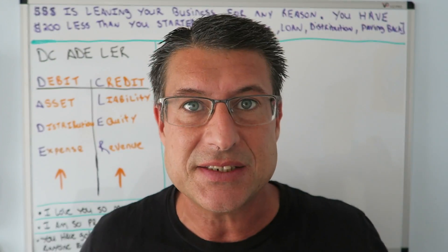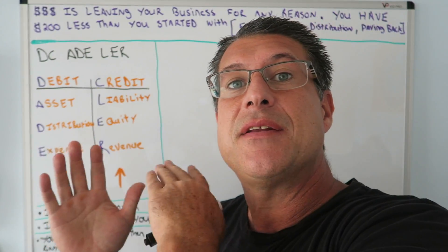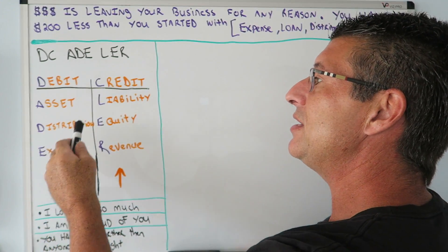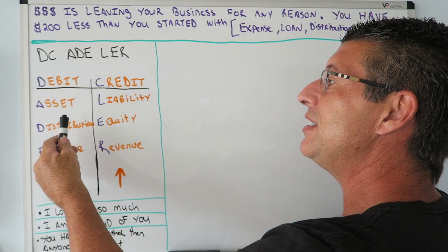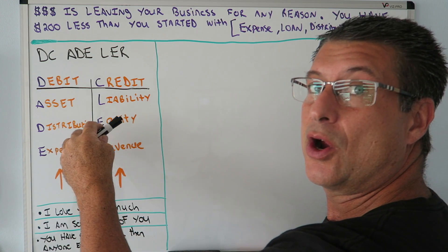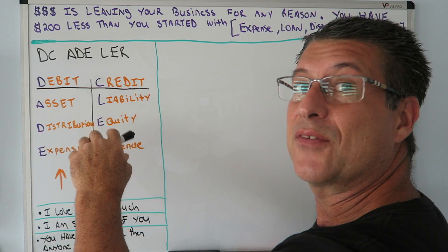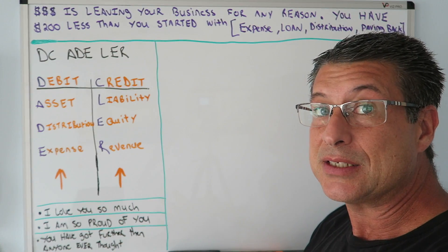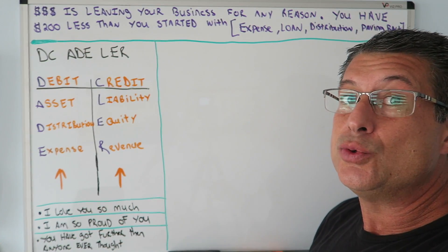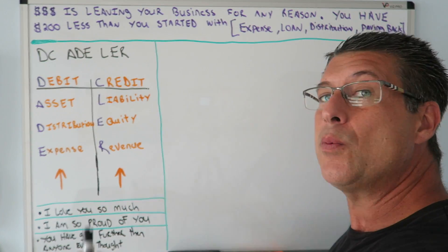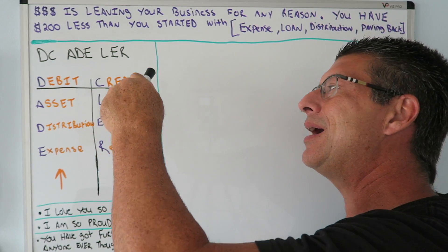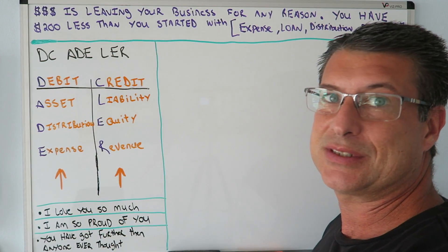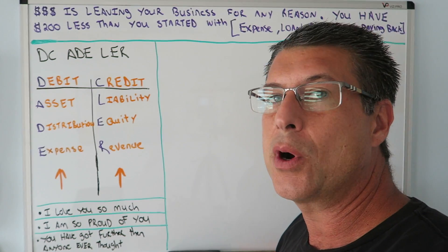Not everyone understands it. If you don't understand this — there's a certain concept with a negative asset, or it could be a negative anything — if you don't get this concept, do not, I repeat, do not go forward. You need to spend 10 hours, 20 hours on this concept before you go forward.